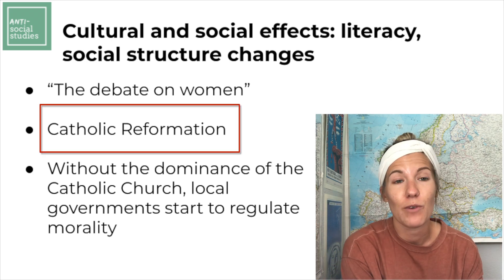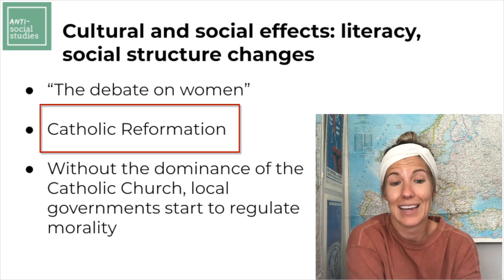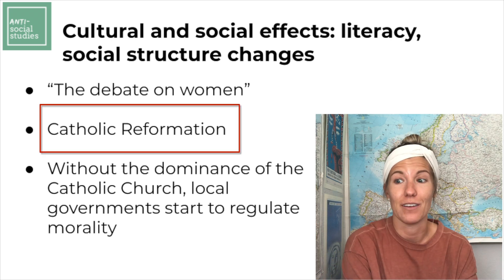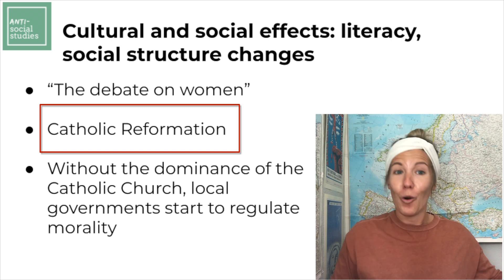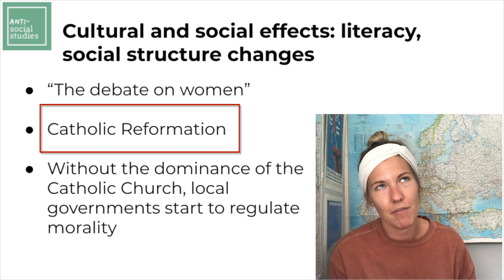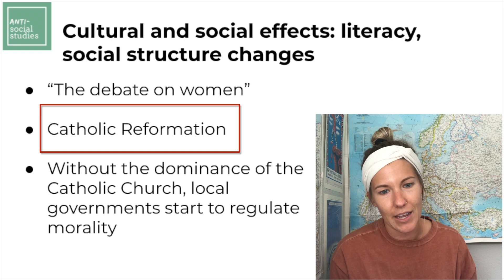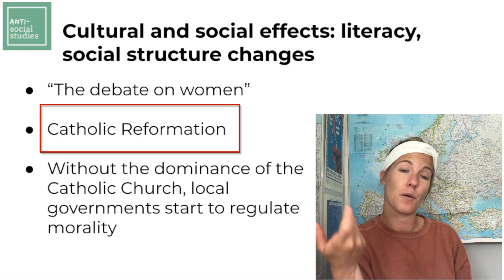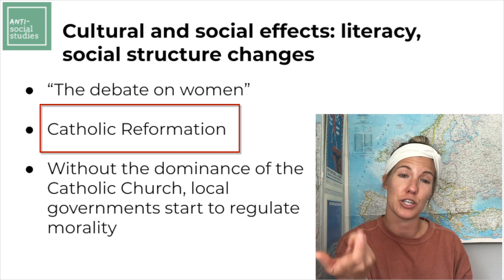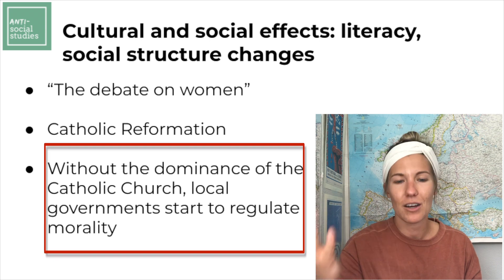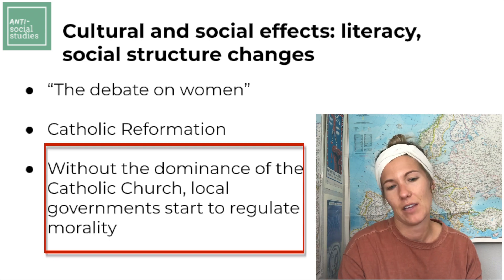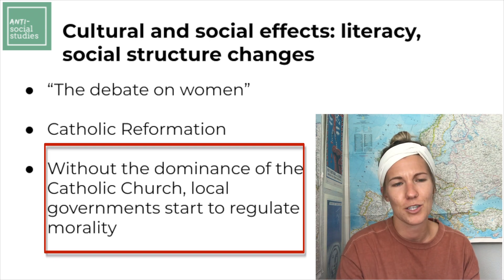The Protestant Reformation also led to the Catholic Reformation. The Catholic Church realized it needed to reform some of the ways it had done things wrong in order to address the legitimate grievances raised by the Protestant Reformation. Additionally, without the dominance of the Catholic Church, local governments started to regulate morality, which led to a whole new set of complications.